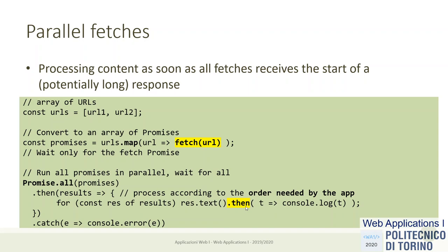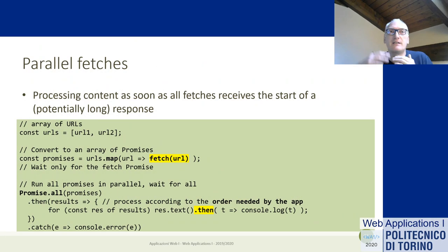Alternatively, you can launch all fetch requests in parallel via Promise.all() on only the fetch promises, then process each response as soon as it arrives individually, rather than waiting for all to complete. This is more efficient but also more complex to write, since responses may arrive in unpredictable order. It's up to you to balance the added complexity against the performance gain.